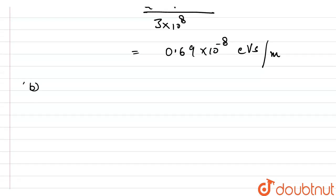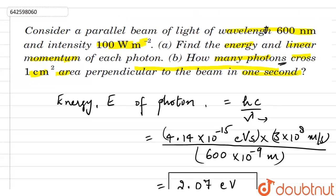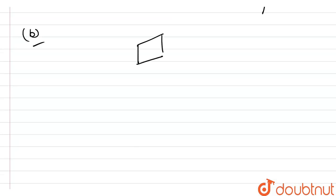For the second part of this question, we have to calculate how many photons cross one centimeter square area perpendicular to the beam in one second. The intensity of this beam of light is 100 watt per meter square, which means through an area of one meter square, the energy of the photons passing is 100 watt — that is, 100 joule of energy passes in one second.